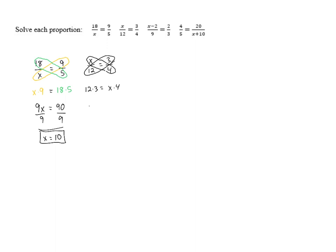12 times 3 is 36. x times 4 is 4x. So we've got 36 equals 4x. To get x alone, we divide by 4, and that gives us 9 equals x, which is our final answer.